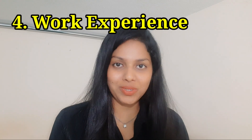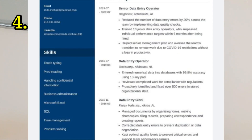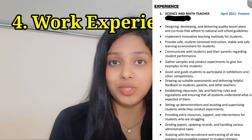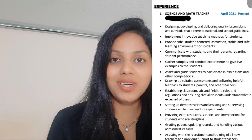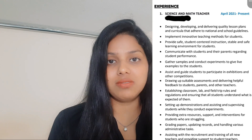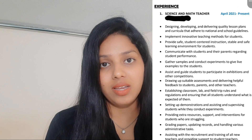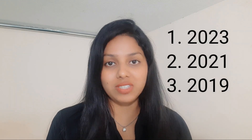The next most important section is work experience. In this section, give the name of the institution you have worked at, the year you worked there, and your job responsibilities at that particular institution. Include all the things you have done in that school or institution. When listing multiple institutions, put the most recent one first — for example, if you worked in three schools, one in 2023, one in 2021, and one in 2019, start with 2023, then 2021, then 2019.